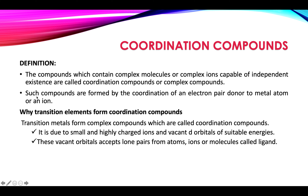Complex compounds have two parts: a metal atom — preferably a transition element — and electron pair donors. Electron pair donors donate to the metal atom through the coordinate covalent bond. The complex part is whatever is written in square brackets, and inside it there are two things: one is the transition metal, and the other things present with the transition metal are electron pair donors, known as ligands, making coordinate covalent bonds with the metal atom.